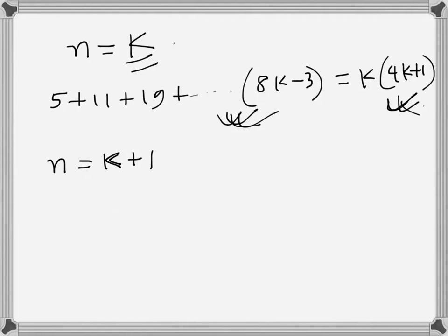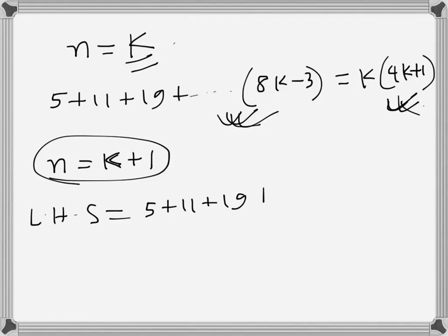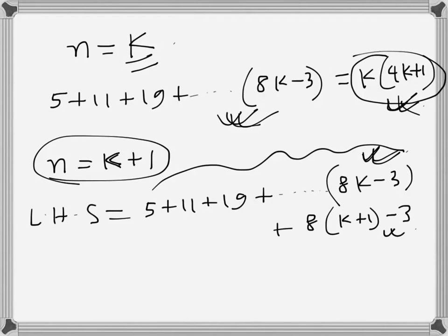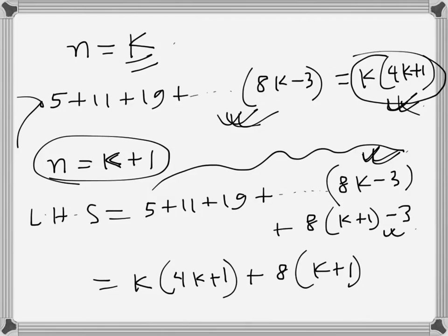When n equals k plus 1, the left hand side is 5 plus 11 plus 19 plus ... up to (8k minus 3) — the sum up to n equals k — plus the next term (8(k+1) minus 3). This part up to k is what we assumed, which equals k(4k plus 1), and then we add the (k plus 1)th term.